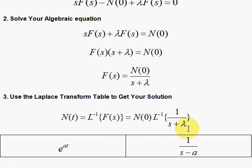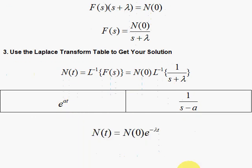Since our lambda here is equal to negative a, or you want to say here a is negative lambda. So that would be over here, a negative lambda, and that would be our answer. And voila, that is the solution to the radioactive decay problem arrived at by the Laplace transform technique.